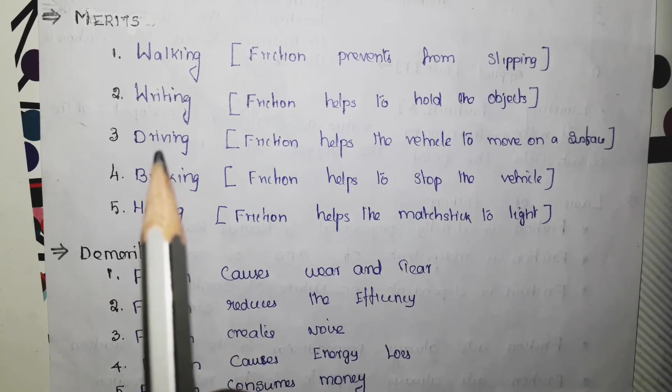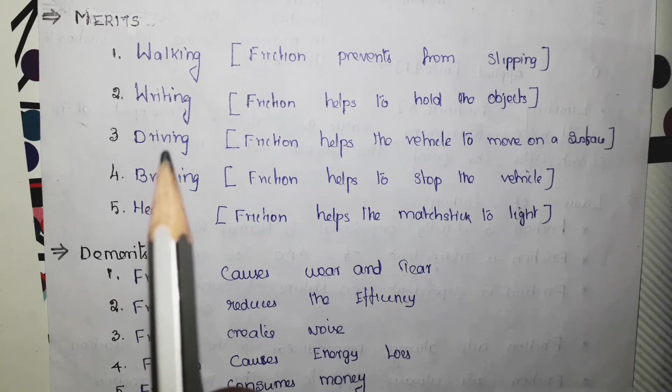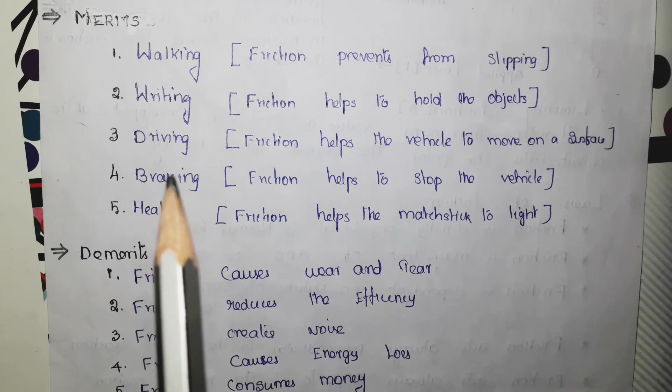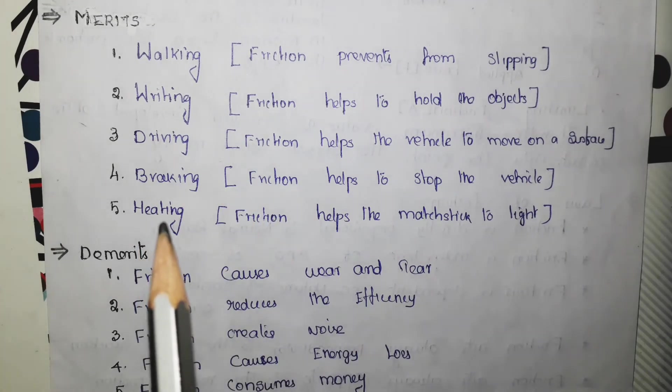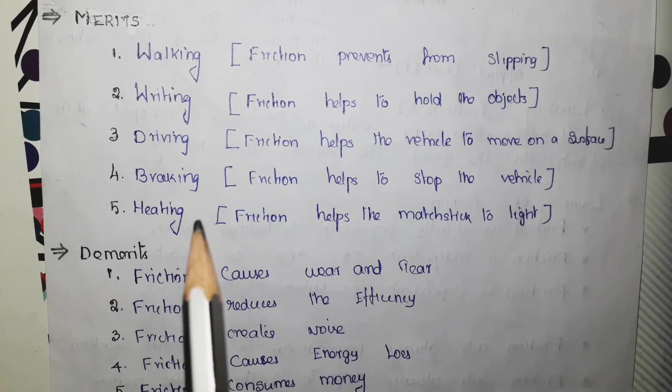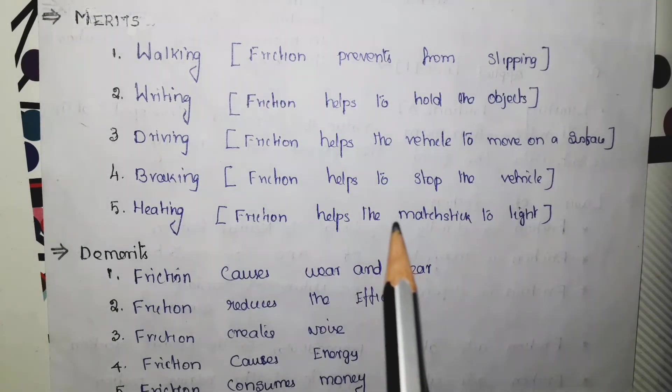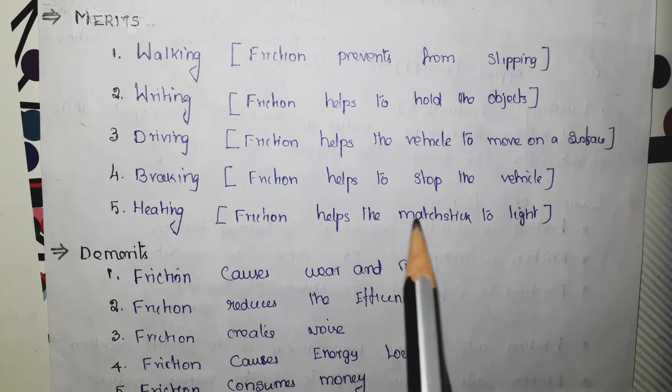The next one is driving. When you have friction between your tire and the road, only then you can drive your vehicle safely. Then braking. If you want to stop your vehicle, friction comes into play to stop the vehicle. The last one is heating. When we rub our hands together, we feel heat on our hand. In the same way, when you rub the matchstick on the matchbox, it will get lighted with the help of friction.